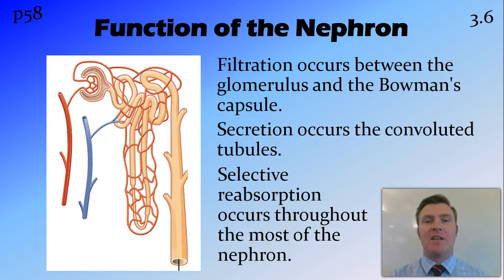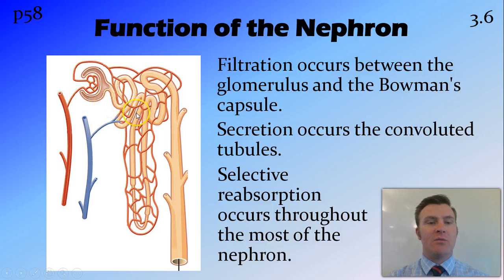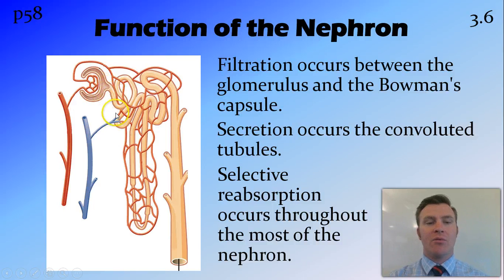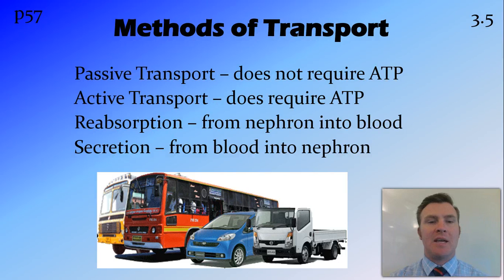There are three processes which happen in the nephron to maintain a constant state of the blood and remove urea. We have filtration, which occurs between the glomerulus and the Bowman's capsule. We have secretion, which occurs between the blood and both the proximal and distal tubules. And we have selective reabsorption, which occurs across pretty much the whole nephron. Before looking at these in more detail, let's recap on a couple of different methods of transport that occur in the mammalian kidney.